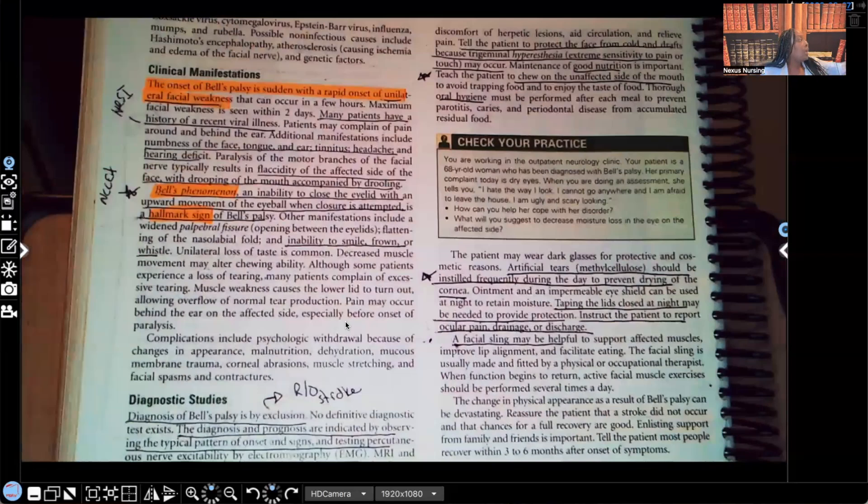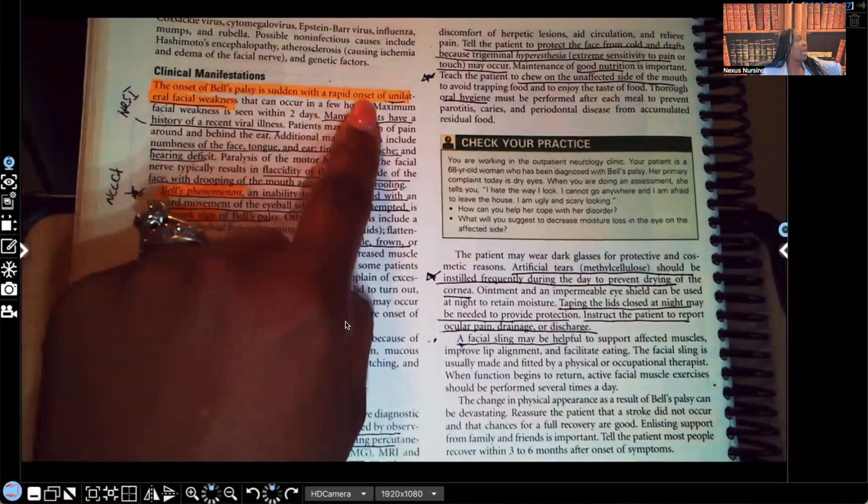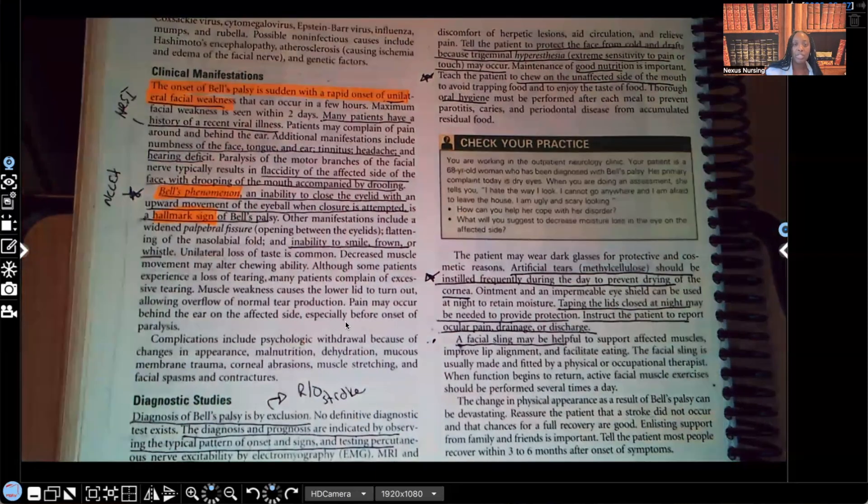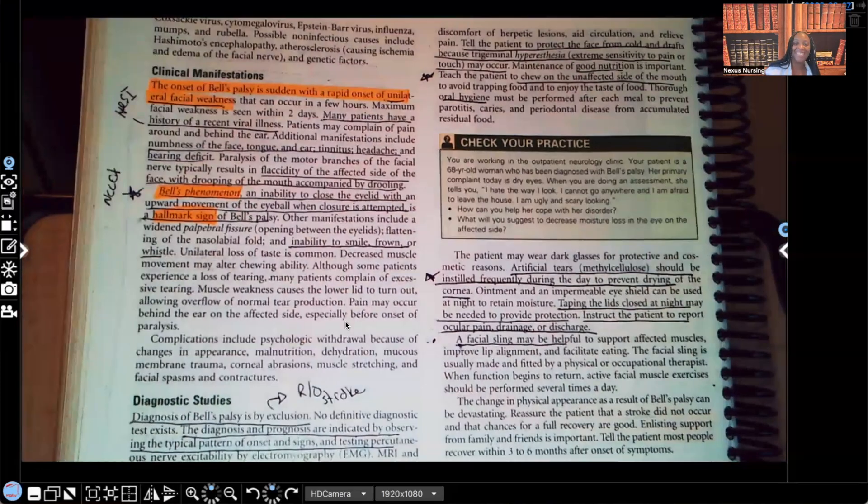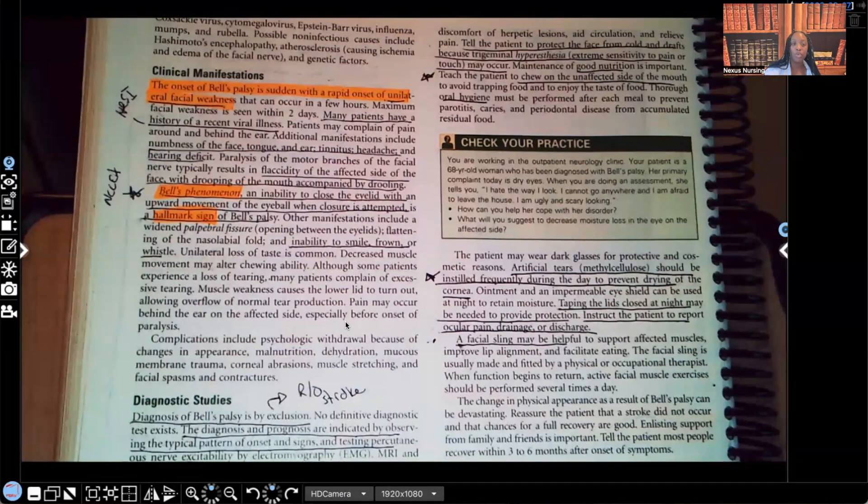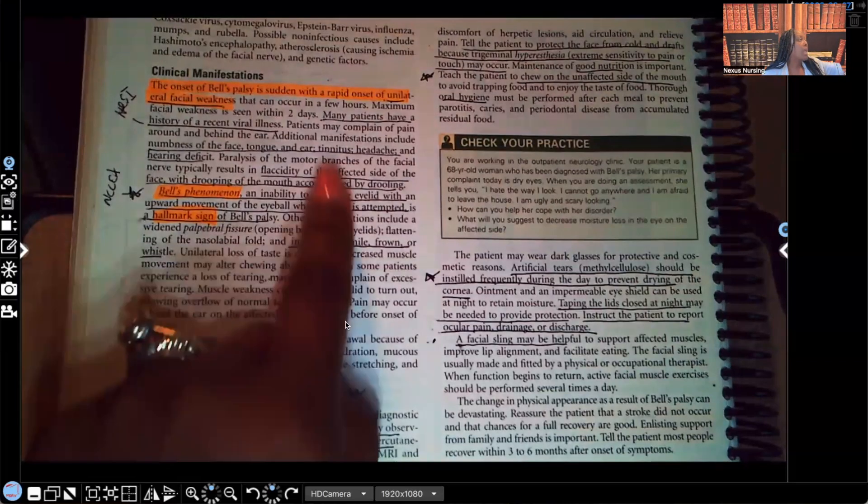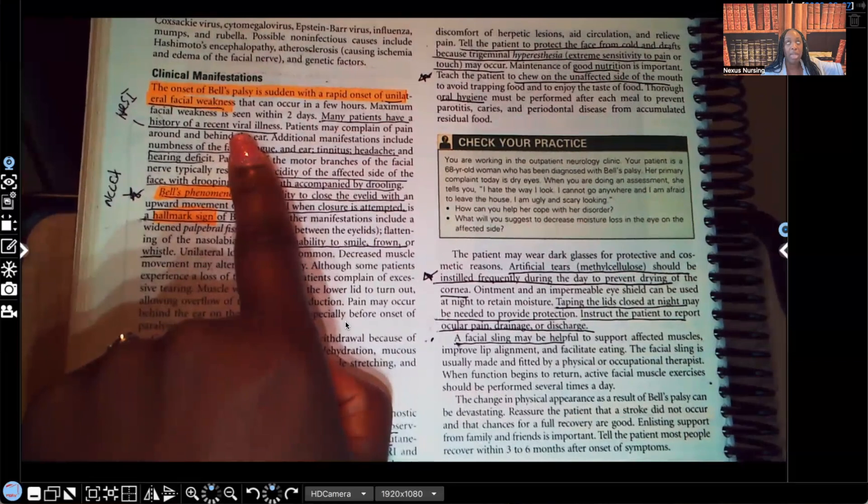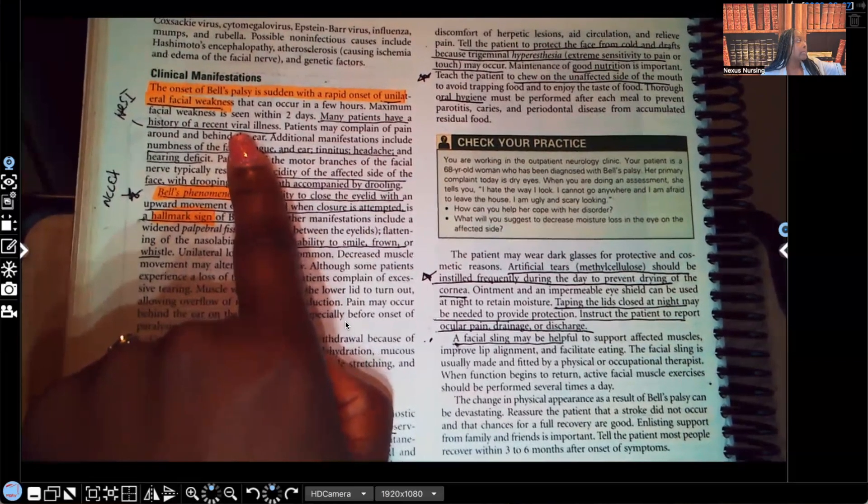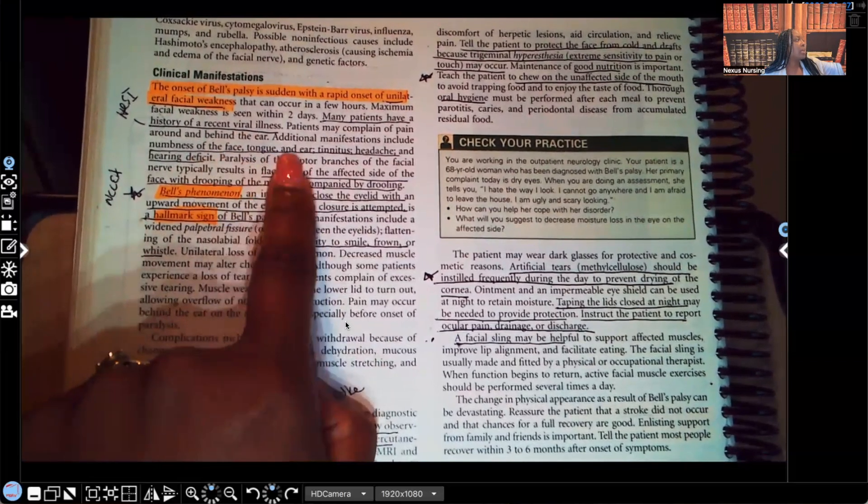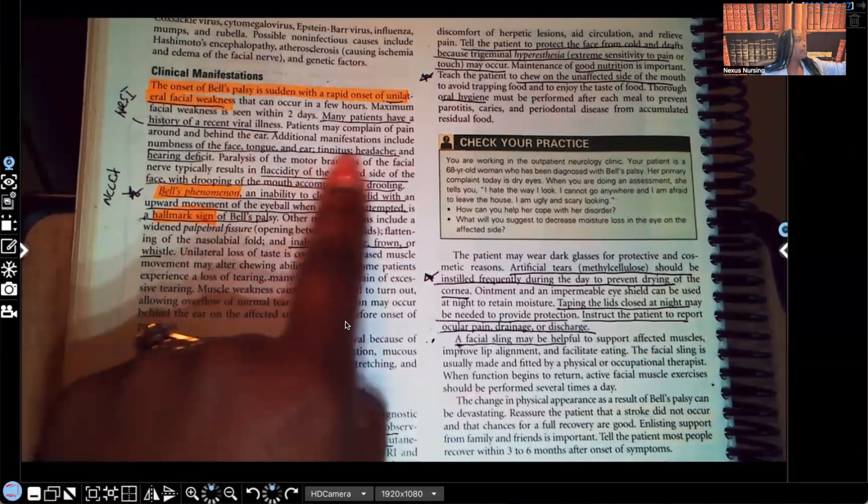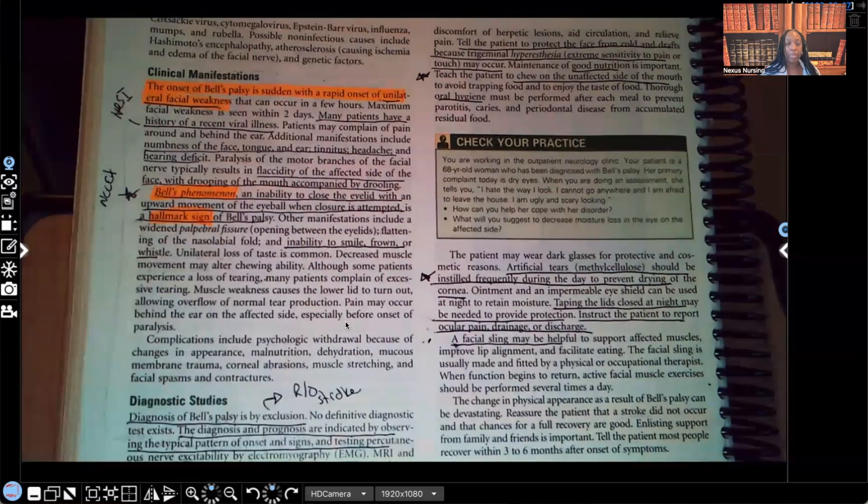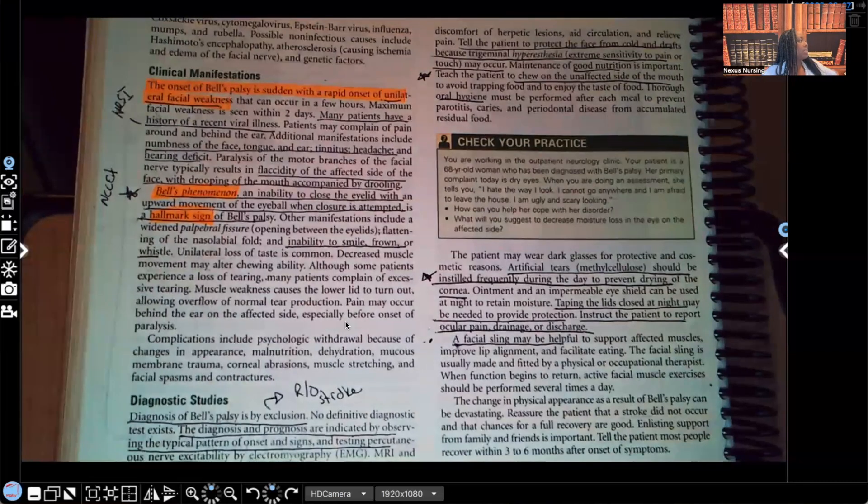If the patient felt pain, we most likely would be talking about trigeminal neuralgia. That's something else. But in Bell's palsy, there is no pain. There's one-sided facial weakness, but no pain. Clinical manifestations. The onset of Bell's palsy is sudden with a rapid unilateral facial weakness. We're seeing that word again, guys. Unilateral. So it's one side. It's not going to be bilateral. It's going to be on one side of the face. Many patients have a history of a recent viral illness. This has been seen on HESI many, many, many, many times. Patient's going to have numbness of the face, tongue, ear, tinnitus. That's the ringing of the ear. Headache and hearing deficit. Flaccidity of the affected side of the face with drooping of the mouth accompanied by drooling.